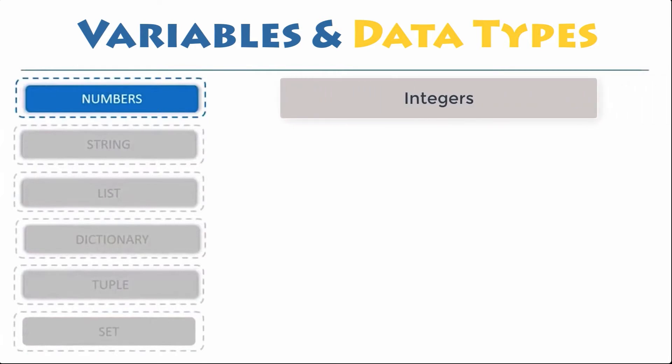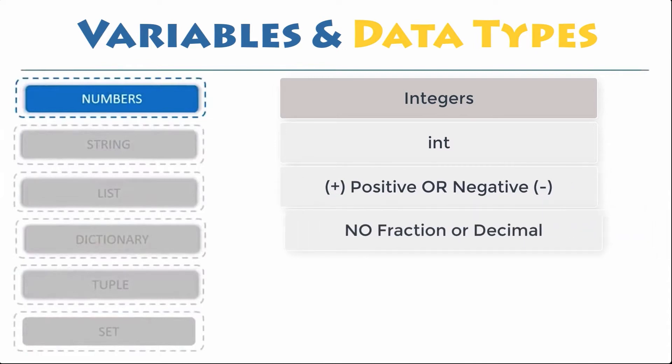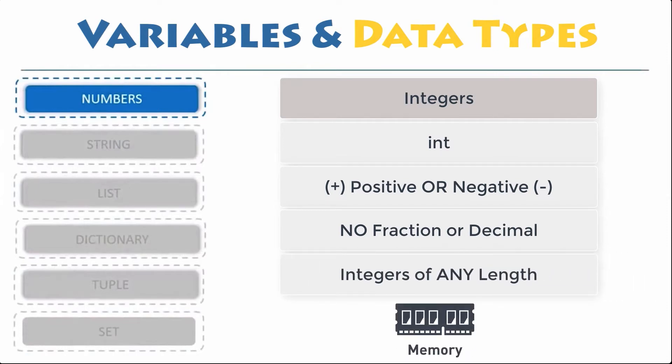Integers. This value is represented by int class. It contains positive or negative whole numbers without fraction or decimal. In Python 3, integers can be of any length. It is only limited by the amount of memory your system has, as are all things. But beyond that, an integer can be as long as you need it to be.